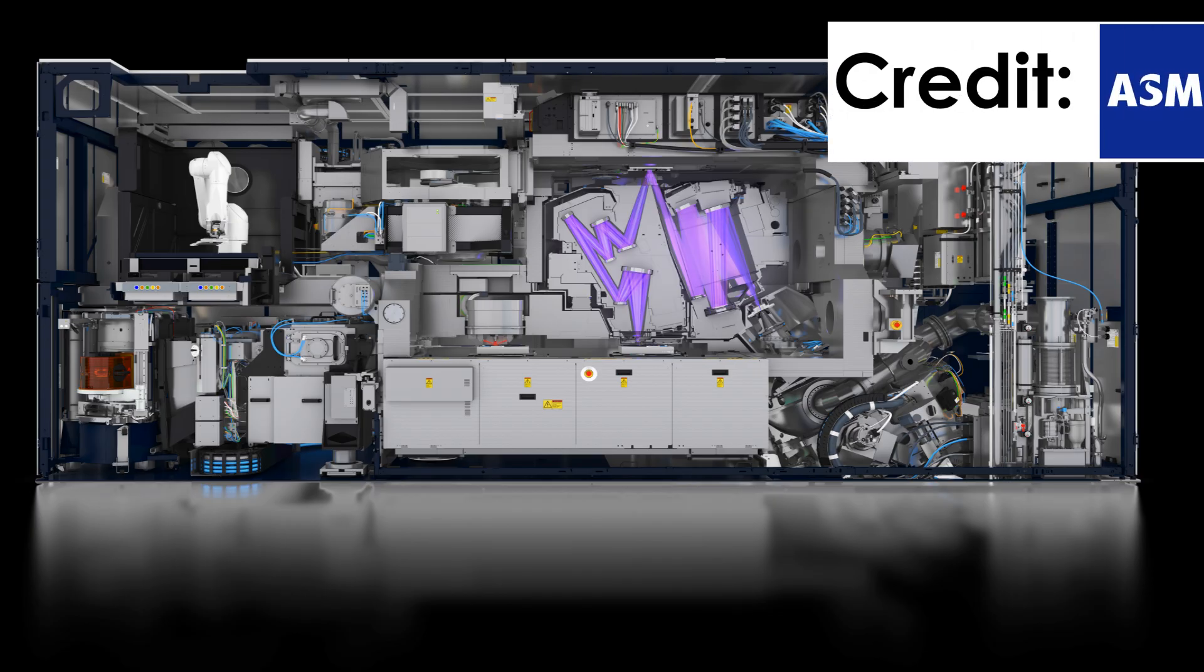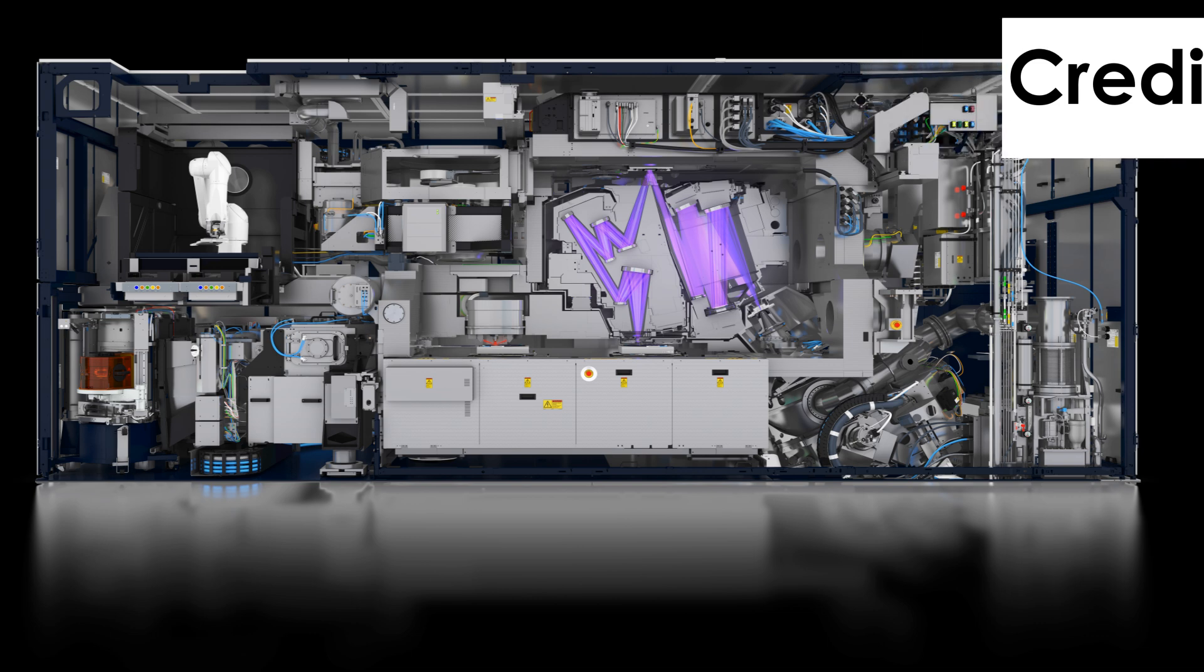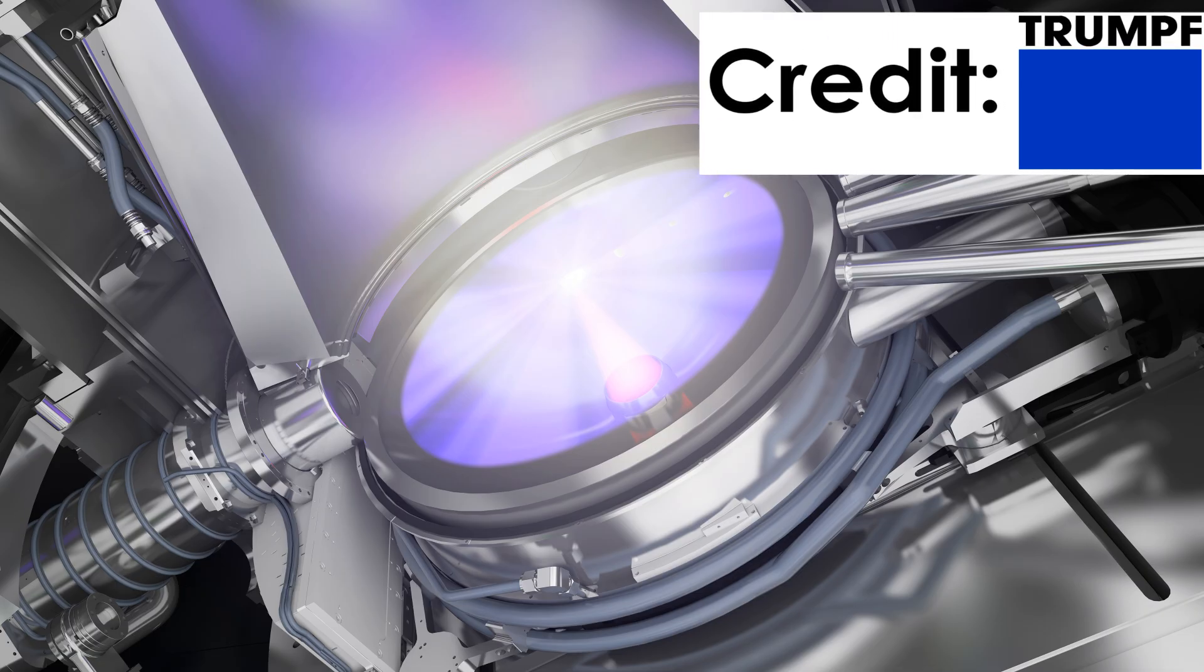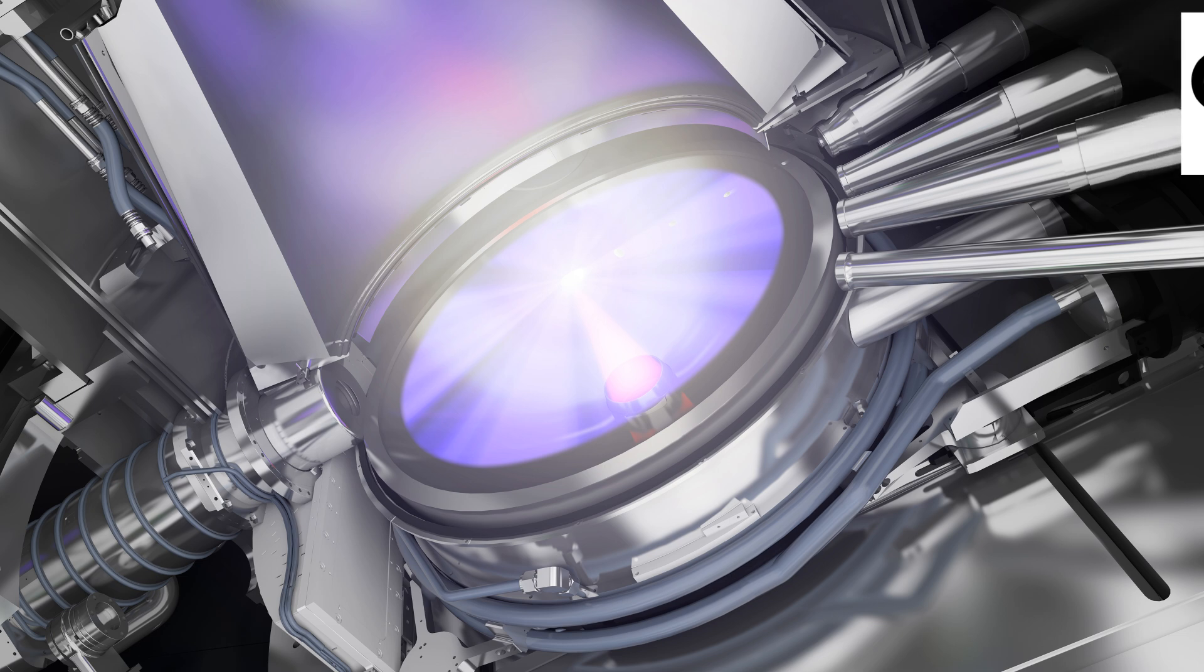The new EUV lithography process, or extreme ultraviolet light, is the smallest wavelength of light that can still be manipulated with mirrors and lenses. There are many ways to create this 13.5 nanometer light, but the most practical way is to hit molten tin with a laser, which turns it into plasma that emits 13.5 nanometer EUV light.